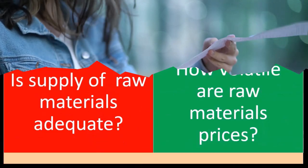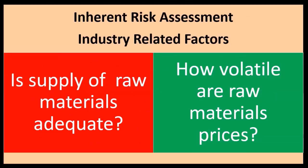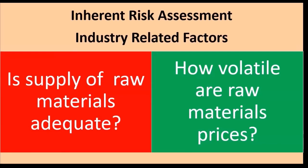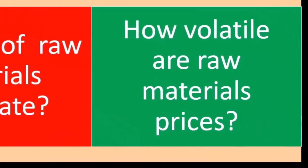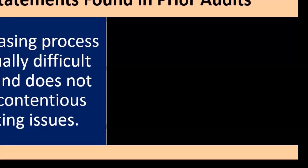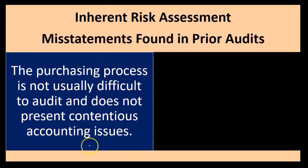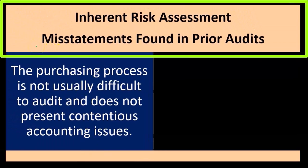If the price is very volatile, it's much more difficult to put in a process that safeguards against errors, because errors won't be as easily detectable given the volatility in the prices of the items we're looking at.